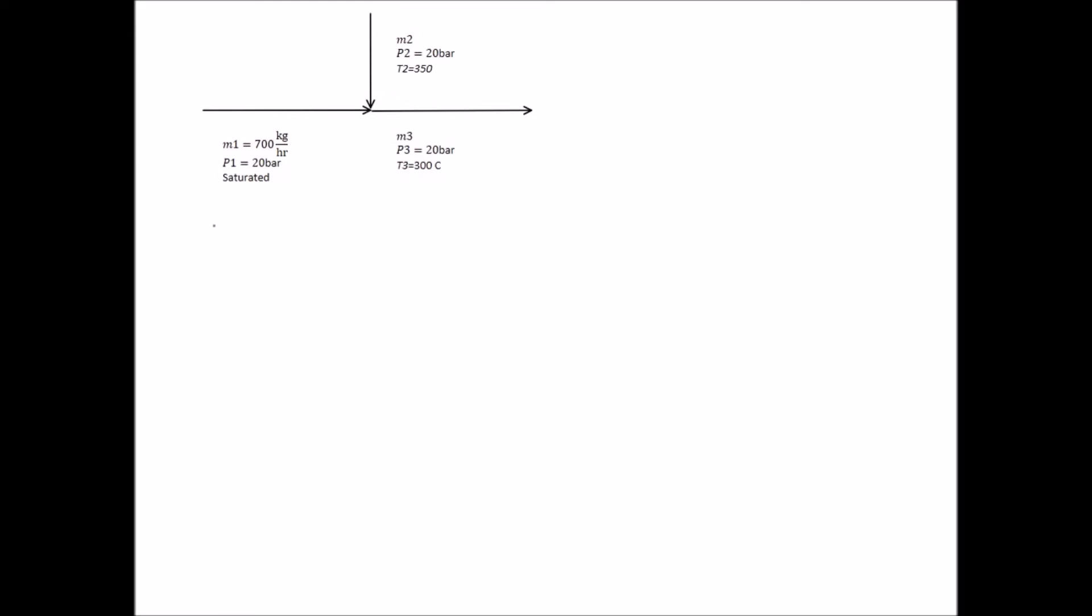Once we've drawn the process flow diagram, we can begin to solve the problem by first writing out the energy balance. We can simplify our energy balance by assuming that heat transfer, shaft work, change in kinetic energy, and change in potential energy are all negligible or equal to zero.